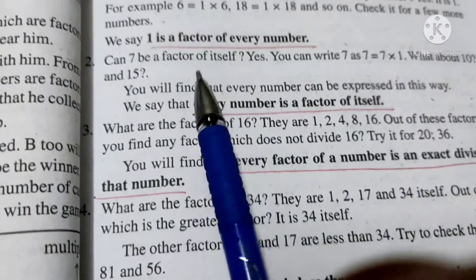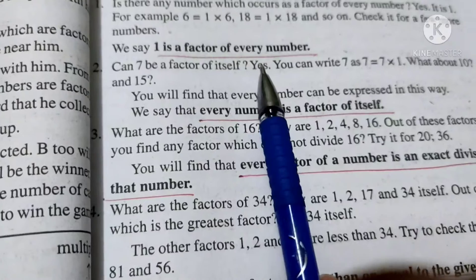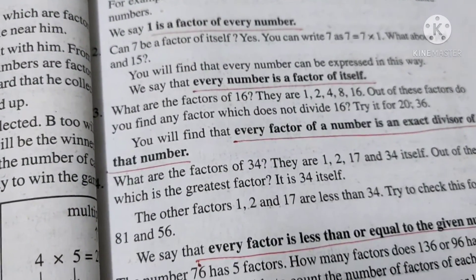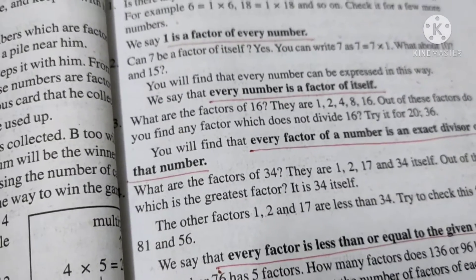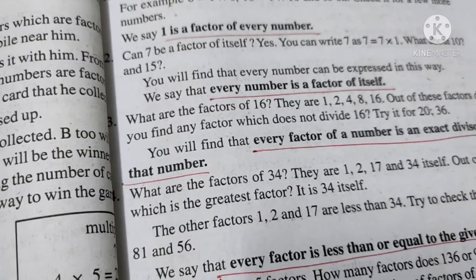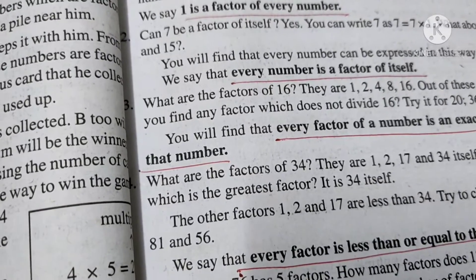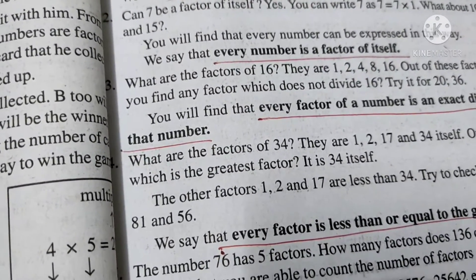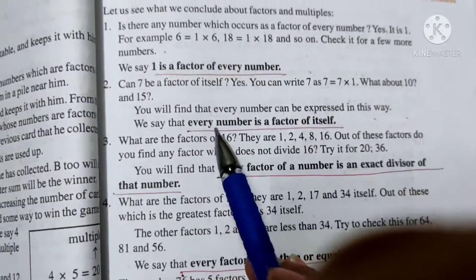Here is one thing - 1 is a factor of every number. Yes, 1 is always a factor of every number. Because in tables, what we have learnt is 6 ones are 6, 7 ones are 7, 11 ones are 11. If we multiply any number by 1, we get the same number. Same case, if we divide any number by 1, we get the same number. So every number is divisible by 1 completely. So 1 is the factor of every number.